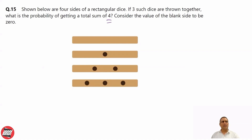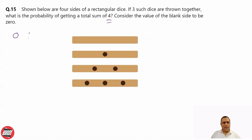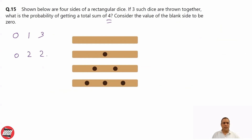So by three dice, how can you get sum four? Consider the value of the blank side to be zero. So how can we get four? On the first dice suppose I get zero, second dice suppose I get one, third dice I should get three — so that is one case. First dice I get zero, second I get two, third I get two — that's another case.